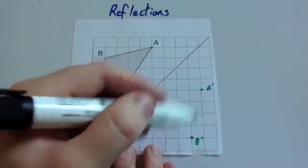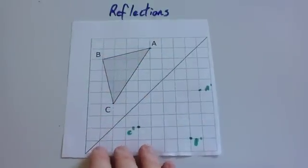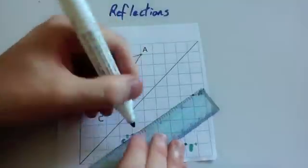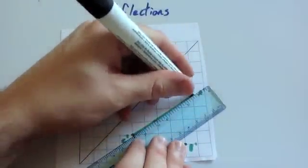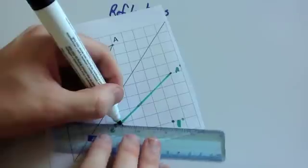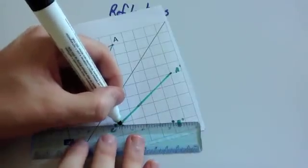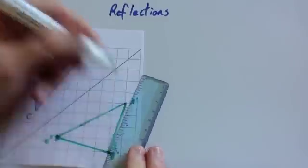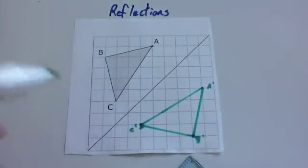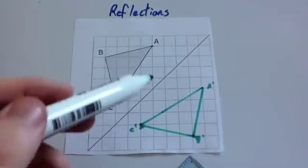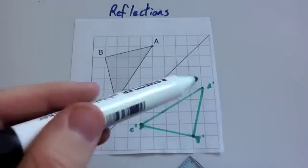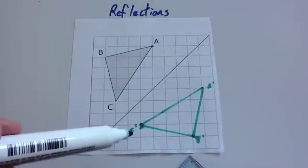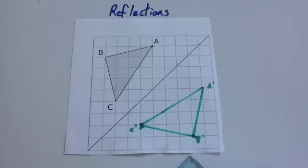Then all you need to do is join up these shapes. So you get your ruler, or these points out. And you just get your ruler, and you join up the lines like such. And there you can see we have reflected the shape ABC in the mirror line to get the image A dash, B dash, C dash. And that's how you do reflections with a diagonal line.